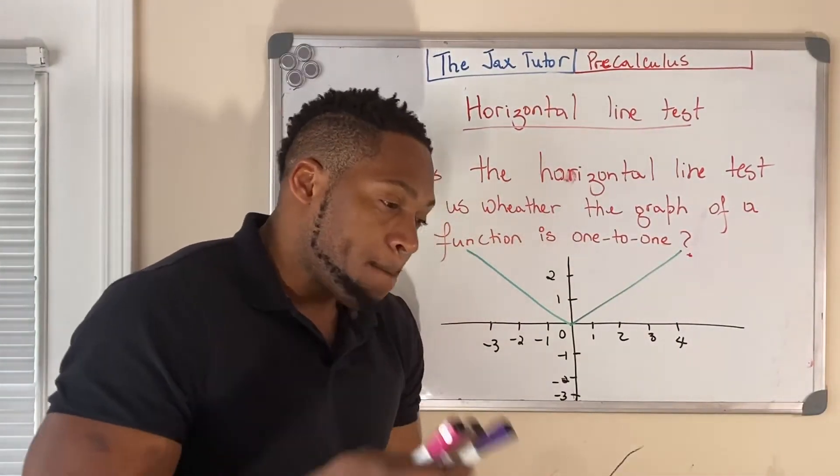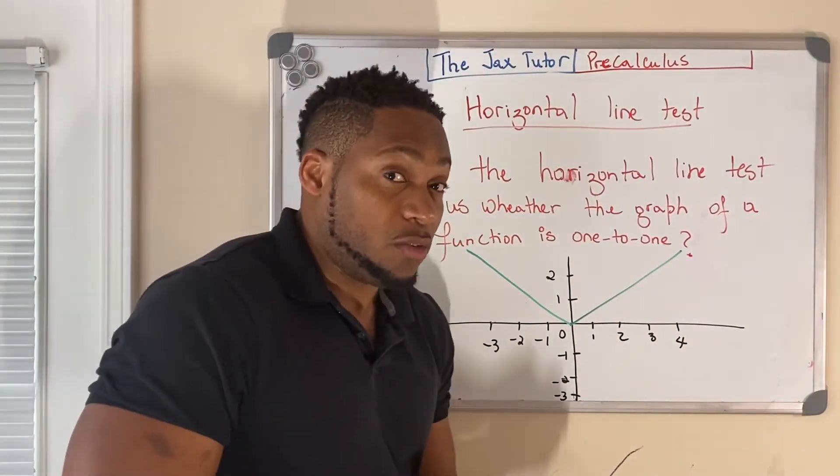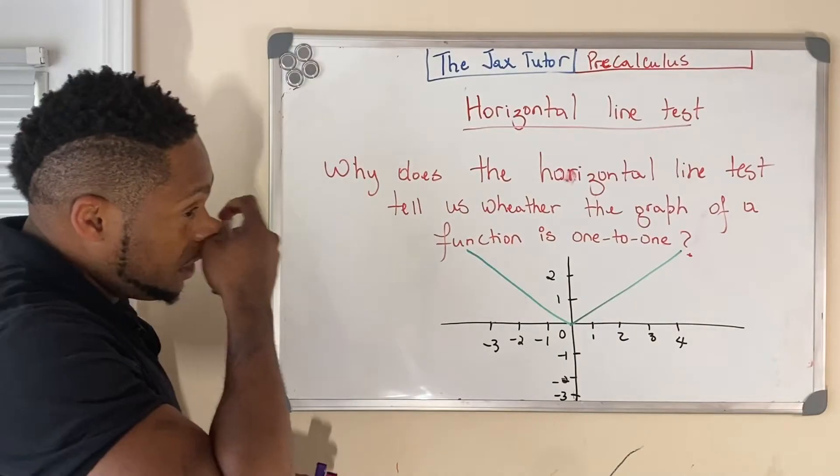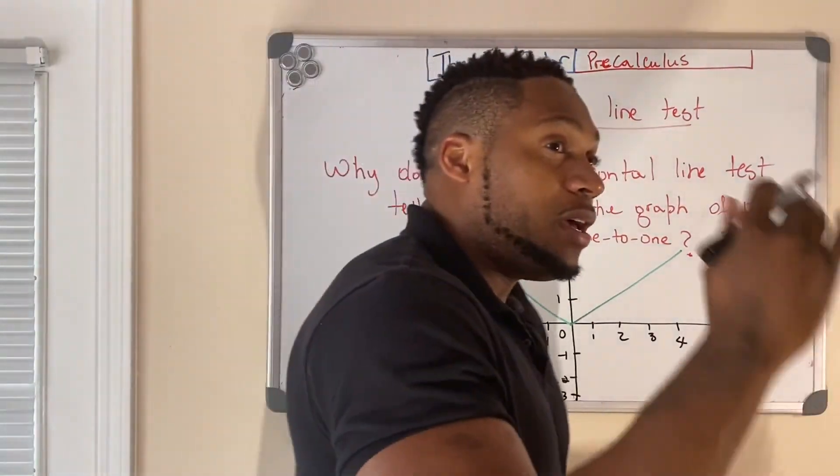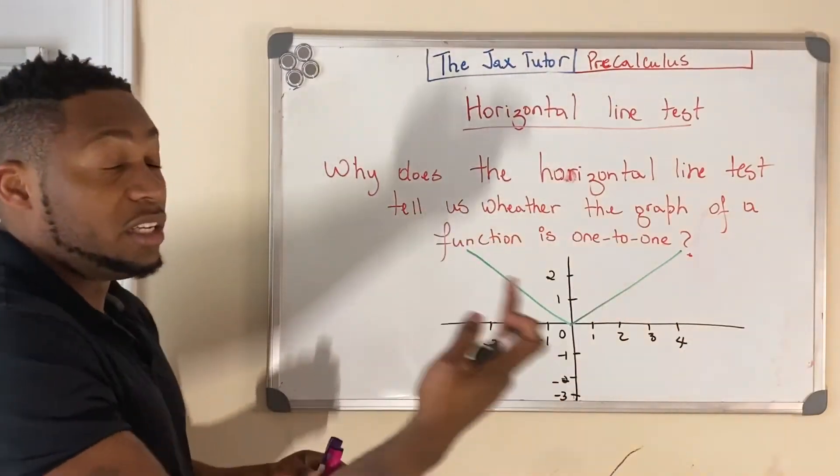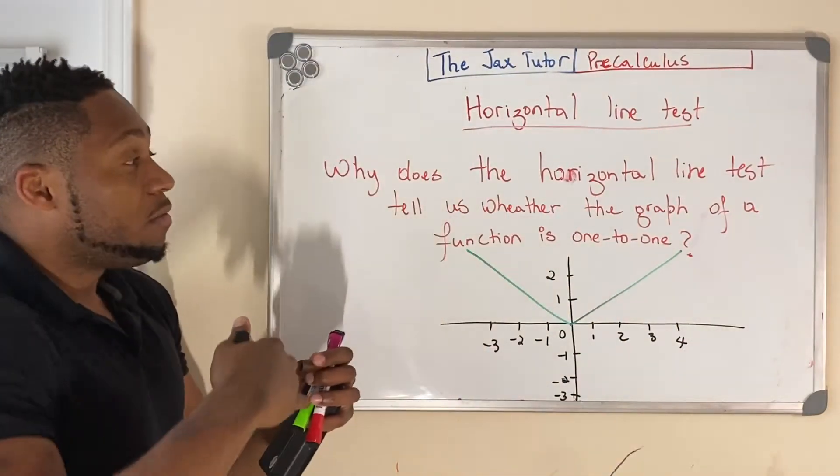So now, let's start with the definition of a function being one-to-one. When a function is one-to-one, what it says here is for each one of the outputs is only associated to one input.